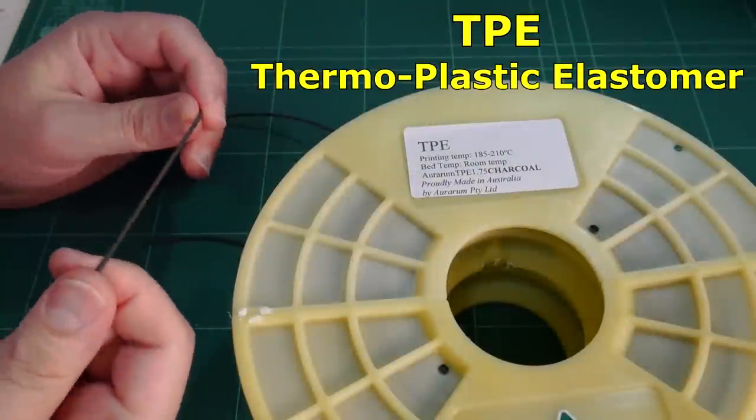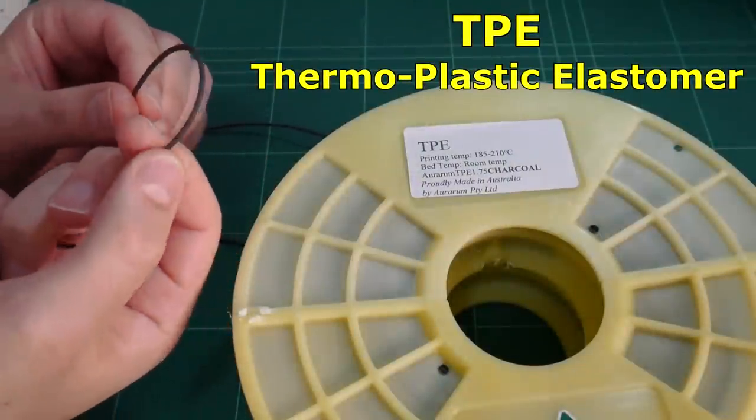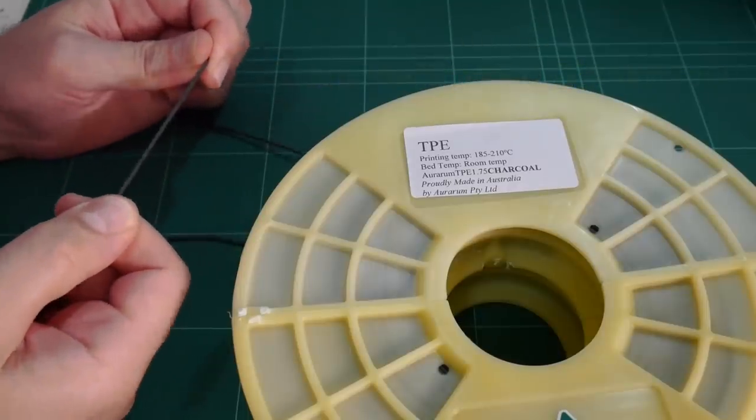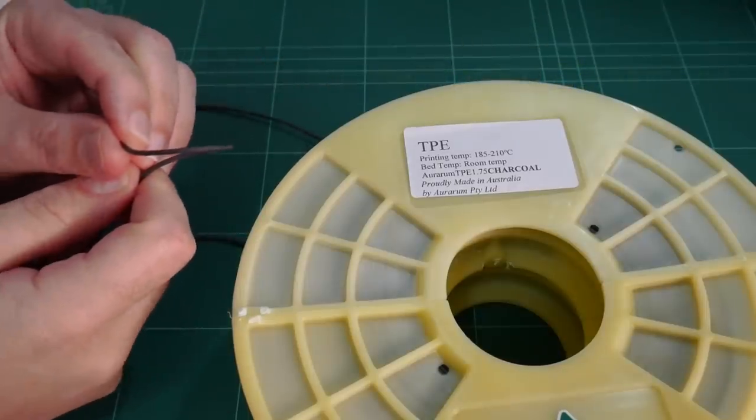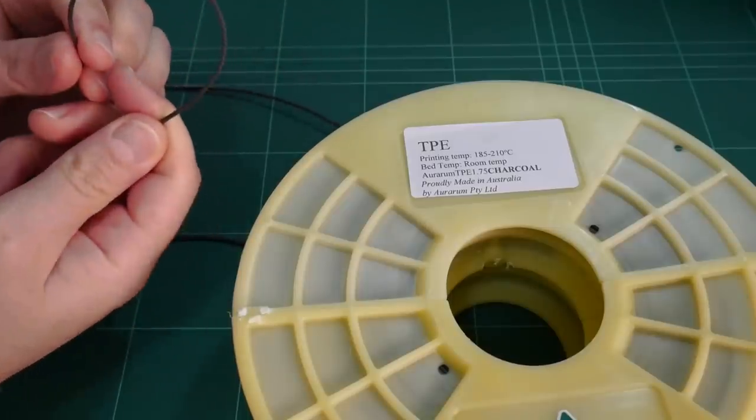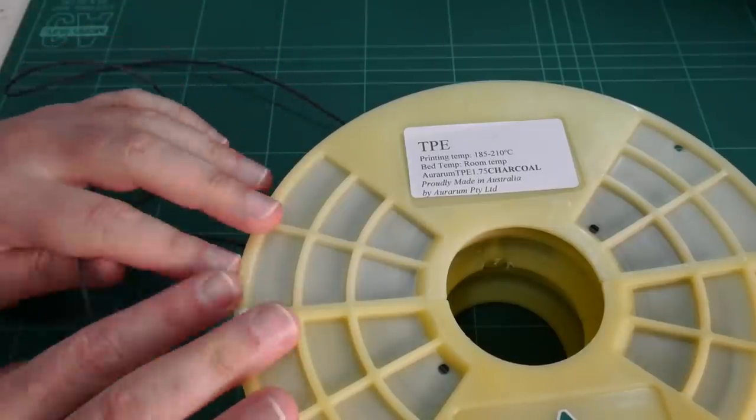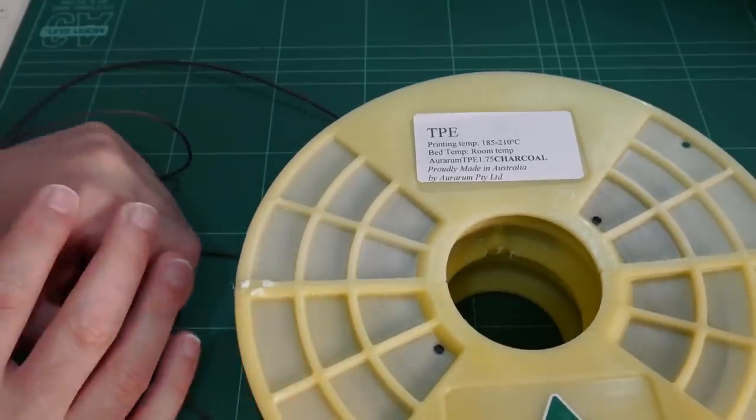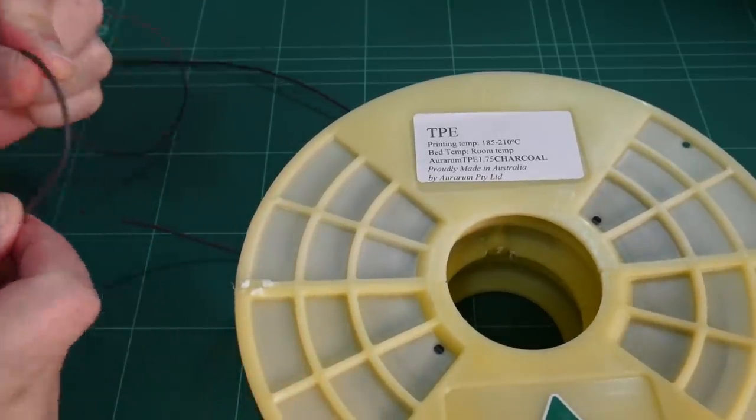TPE, or Thermoplastic Elastomer, is a rubber-like filament which can stretch and compress almost like a spring. Just don't stretch it too much, otherwise it'll remember that stretch state. It's great for printing protective cases on phones and action cameras, or for vibration damping.